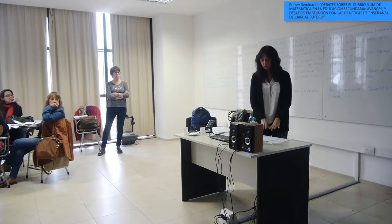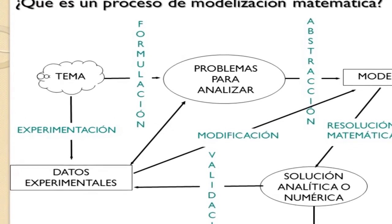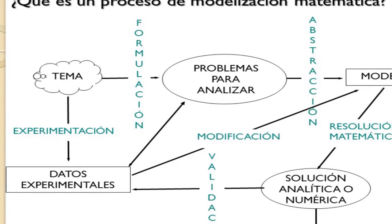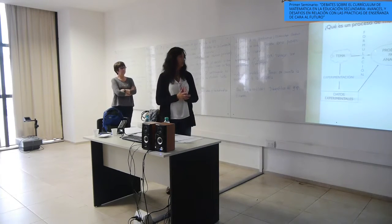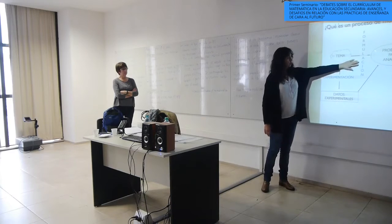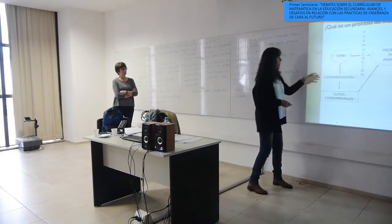El esquema del proceso de modelización se inicia con un tema —en una nubecita porque puede ser difuso, con bordes no bien delimitados— y ese tema puede requerir buscar datos o recolectarlos de alguna experiencia previa, entrando en un proceso de experimentación que ayuda a formular un problema. También puedo formular el problema antes de tener los datos, pero a veces tener datos me permite formular problemas. Este proceso de formulación parte de algo difuso para llegar a problemas mejor delimitados, con ciertos recortes.